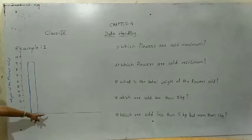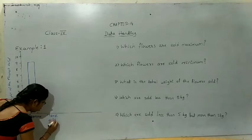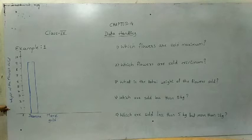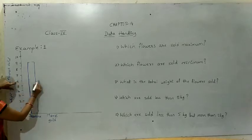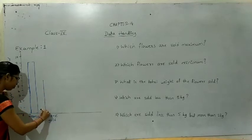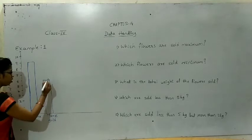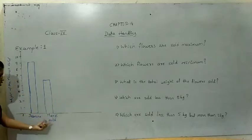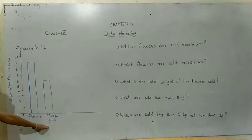The second flower is marigold, sold 6 kg. See 6 here: 1, 2, 3, 4, 5, 6 — so we take exactly equal to 6. We draw one bar for marigold. While drawing in your classwork book, you should use a scale and pencil — that is important. The number of kg sold is 6 kg for marigold.